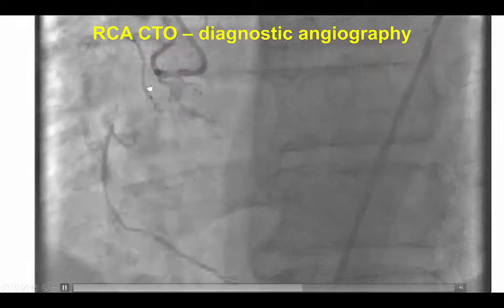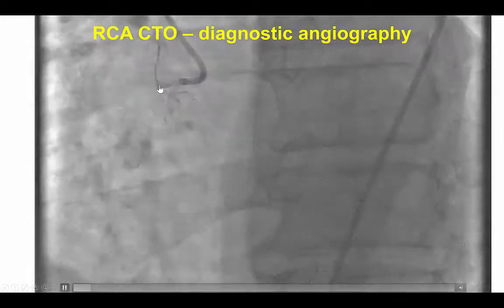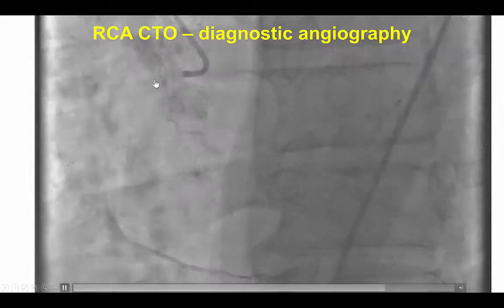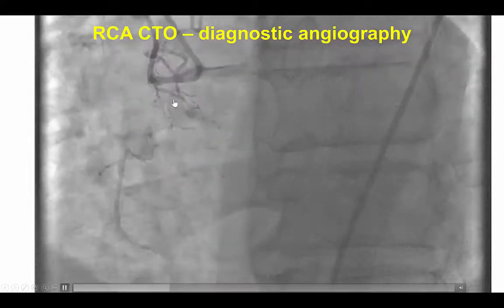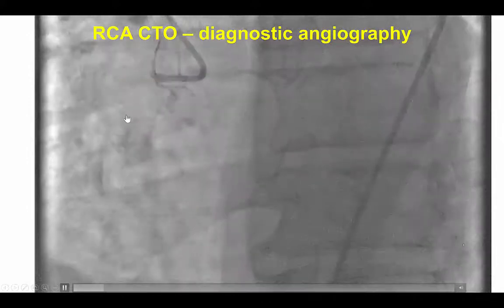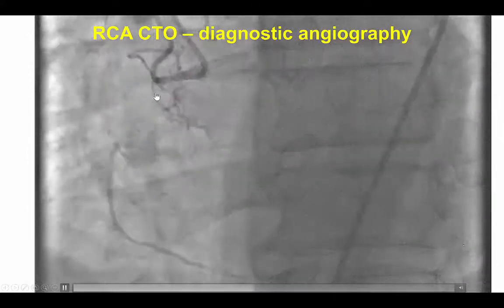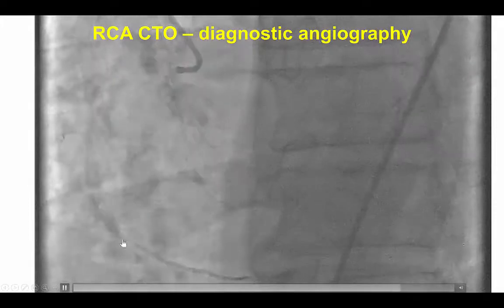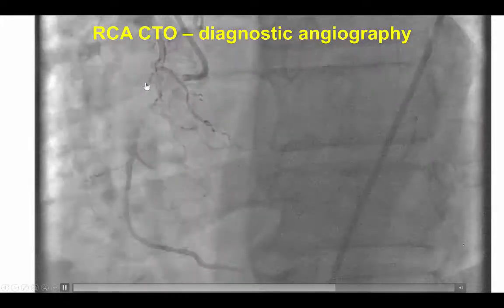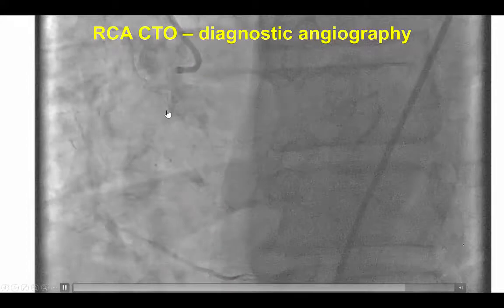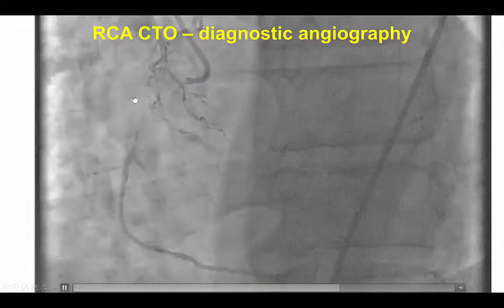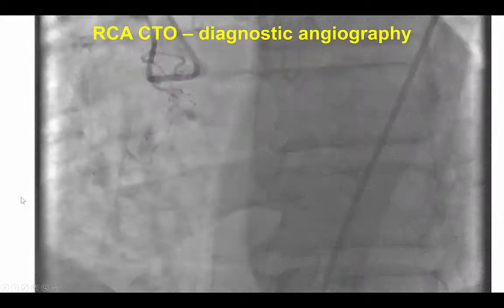The occlusion had a blunt, ambiguous cap because of the origin of two side branches — a large conus branch and a smaller marginal branch — right at the proximal cap. The lesion length was approximately 30–40 mm, the distal vessel was of good caliber without significant disease, and was filling via ipsilateral bridging collaterals. Therefore, we were hesitant using the antegrade approach.